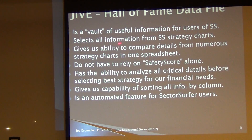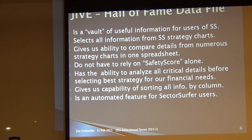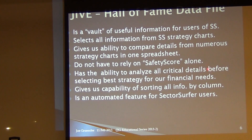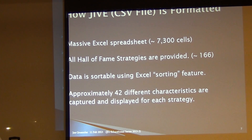It's a vault of information — it selects all information from the Sector Surfer strategy charts. There are about 42 different characteristics on each strategy chart that you can review. It gives us the ability to compare details across numerous strategy charts. We do not have to rely only on the safety score. There are currently approximately 166 different strategies in the Hall of Fame, making up a massive Excel spreadsheet of approximately 7,300 cells of information, and it is sortable using Excel's sorting method.